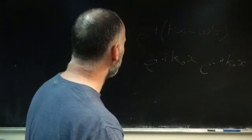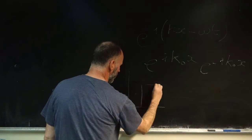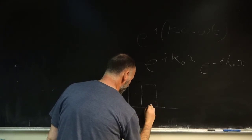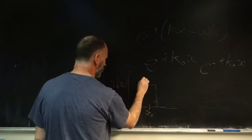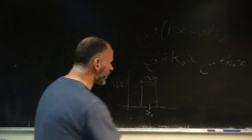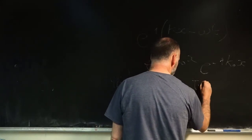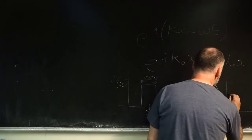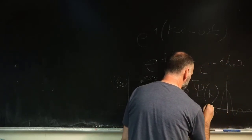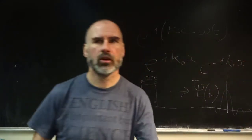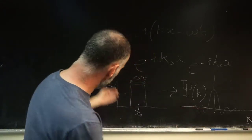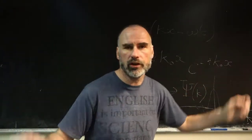You've already seen on worksheet two, question four, a top hat function — a wave function that looks like a rectangular shape centred at some point with some width delta x. You've seen that if you Fourier transform that to get its representation in terms of spatial frequency, what you get is a sinc function on the k axis. So a top hat Fourier transforms to a sinc function, and if you take the square of this — since it's a real function — you get a sinc squared function.